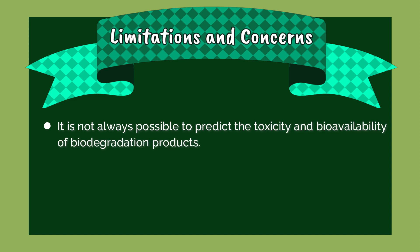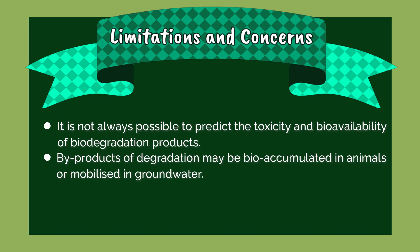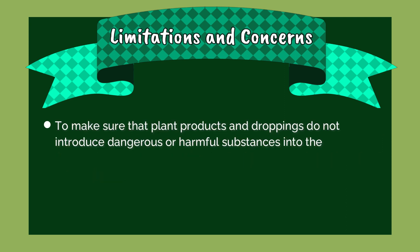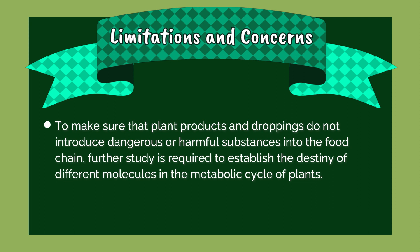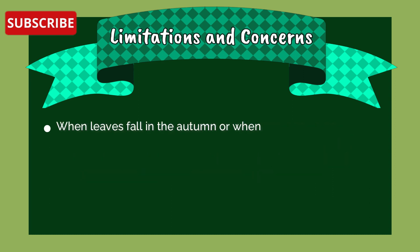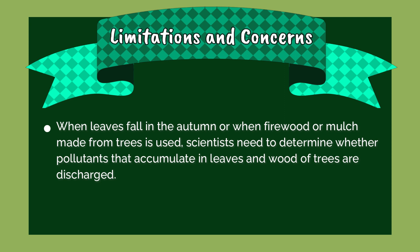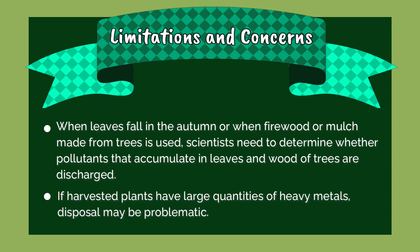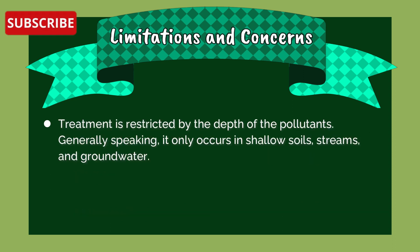Limitations and concerns of bioremediation: it is not always possible to predict the toxicity and bioavailability of biodegradation products; byproducts of degradation may bioaccumulate in animals or be mobilized in groundwater. Further study is required to establish the fate of different molecules in the metabolic cycle of plants. Scientists need to determine whether pollutants that accumulate in leaves and wood of trees are discharged when leaves fall or when firewood or mulch is used. If harvested plants contain large quantities of heavy metals, disposal may be problematic.